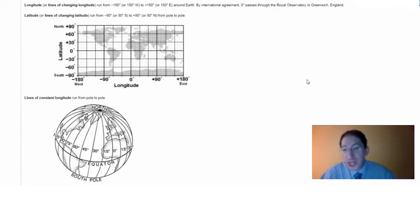Lines of changing longitude run around the globe, 360 degrees. We mark them from 180 degrees west, which we denote negative 180, through 180 degrees east, which we denote positive 180, and then it cycles around.